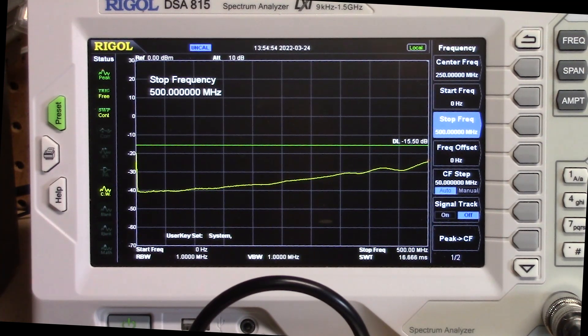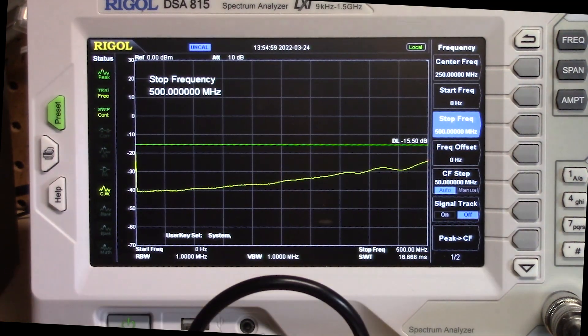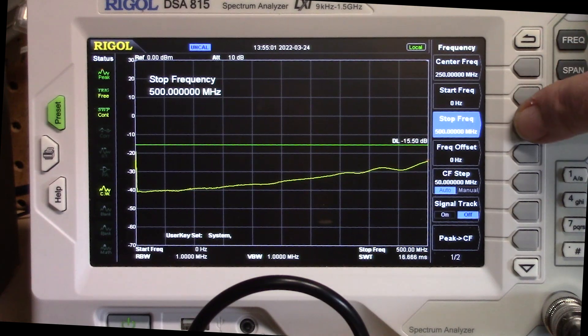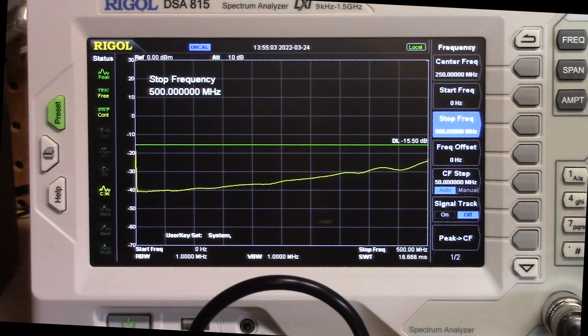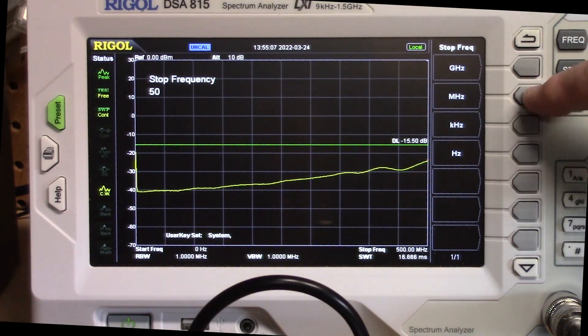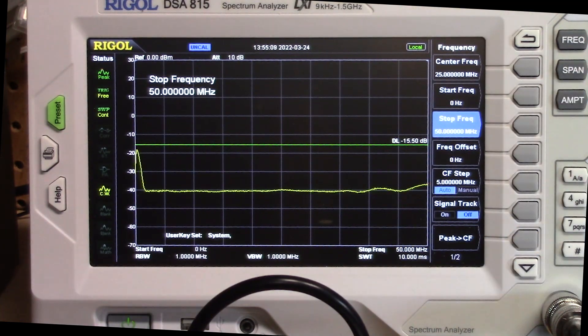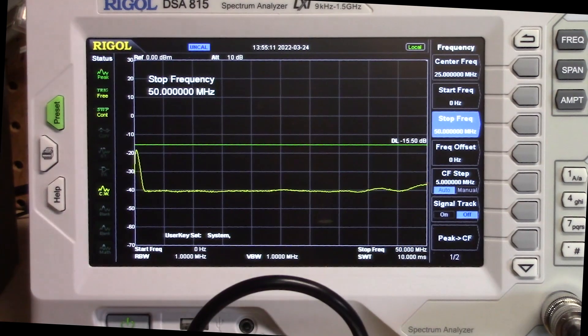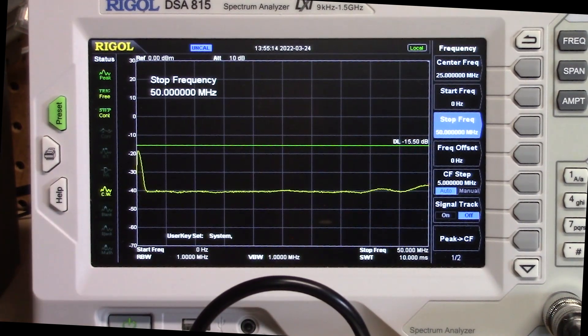But it looks really solid for anything, certainly in HF and VHF range. And let's change our frequencies, and let's change our stop, and let's set that to 50 megahertz. And our start is still zero. So you can see there that at the HF frequencies, this thing is really solid, minus 40 dB. Just absolutely spot on. So that's kind of what we're looking for.